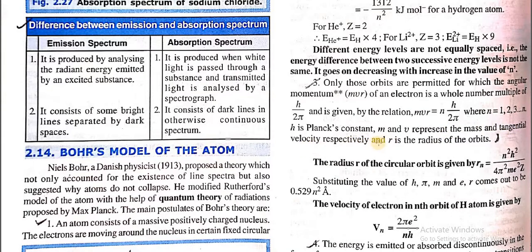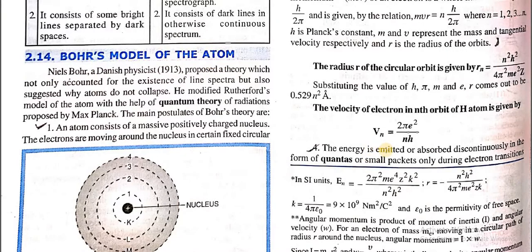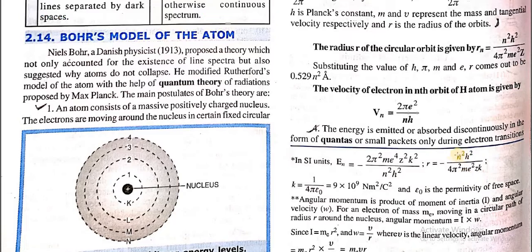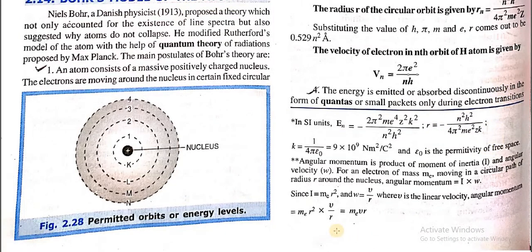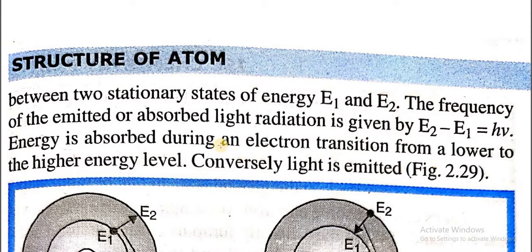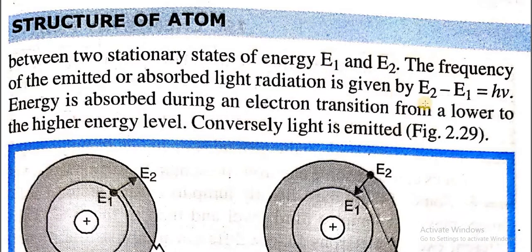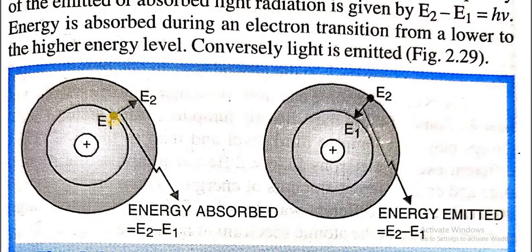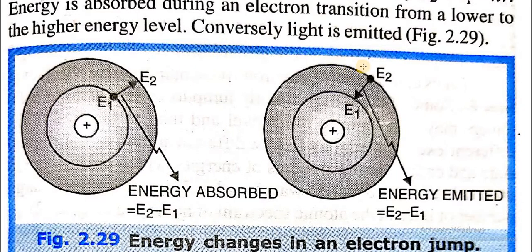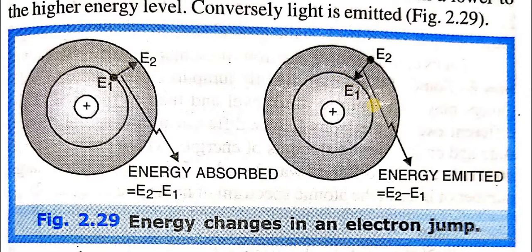According to the fourth postulate, energy is emitted or absorbed discontinuously in the form of quanta or small packets only during electron transition. When an electron jumps from one energy level to a higher energy level between two stationary states of energy E1 and E2, the frequency of the emitted or absorbed light radiation is given by E2 − E1 = hν. Energy is absorbed during an electron transition from a lower to a higher energy level, and conversely, light is emitted when an electron jumps from a higher to a lower energy level.